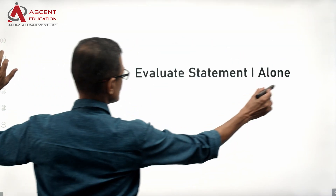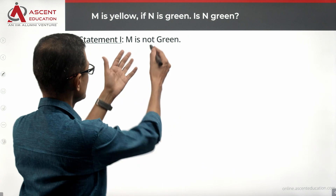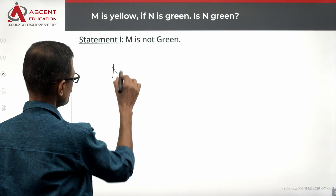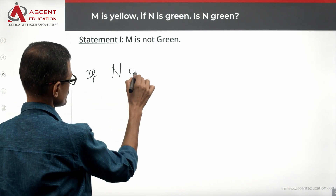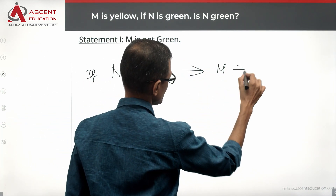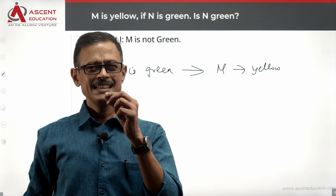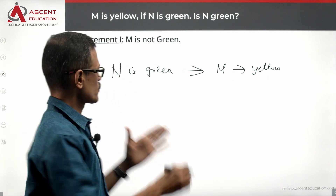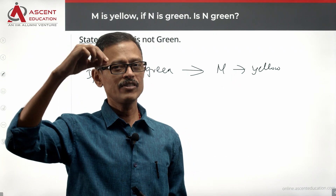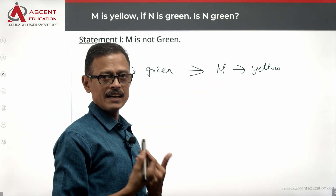Start with Statement 1: M is not green. From this, can we determine whether N is green? M could be yellow or M could be red — M is just not green. From the question stem, we know: if N is green, then M should be yellow. But even if N is not green, M could still be yellow, so we cannot conclude anything definitive about N from Statement 1 alone.